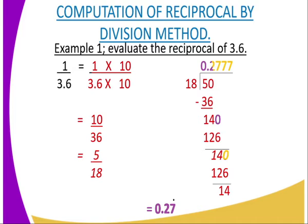This means you will have a recurring decimal where 7 is the recurring number. Therefore, the answer is written as 0.27̄ — you write a dot on top of 7 to show that it is recurring.